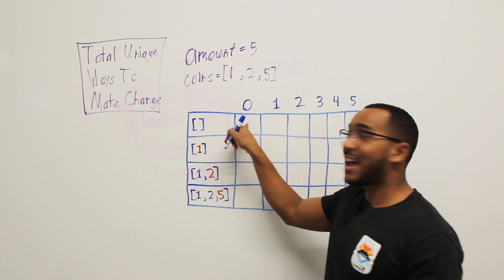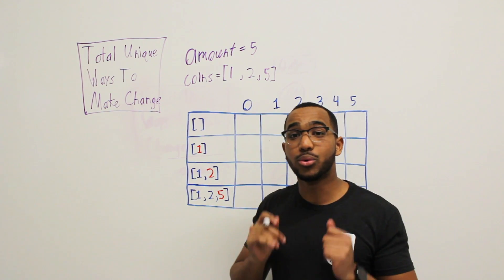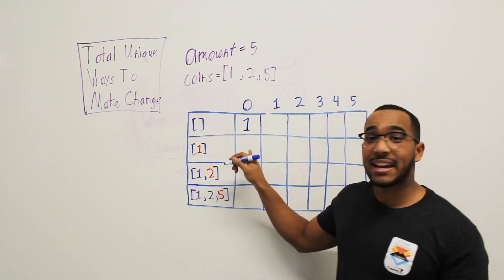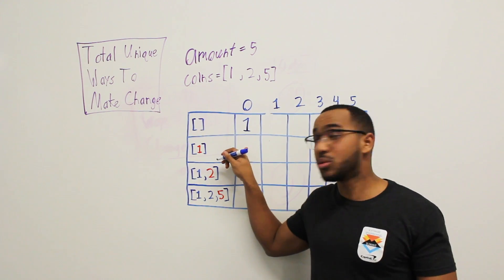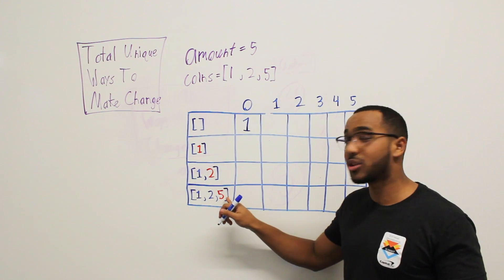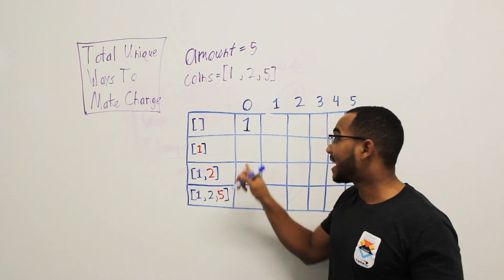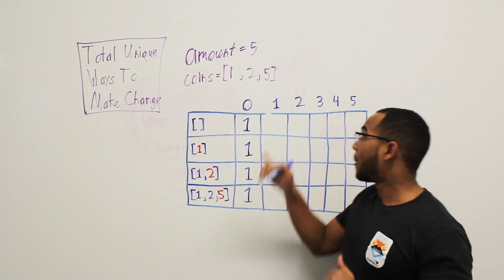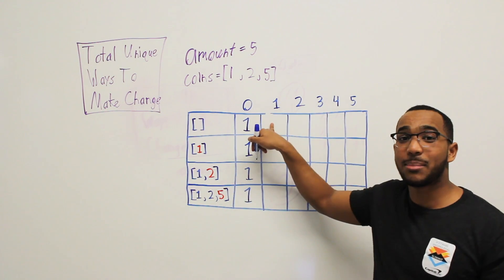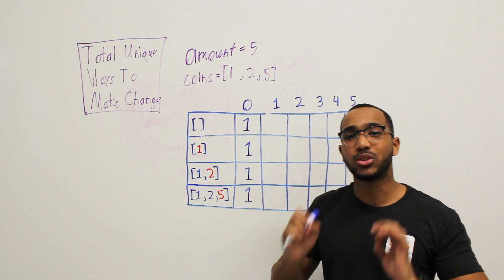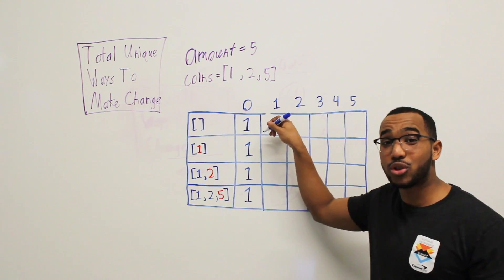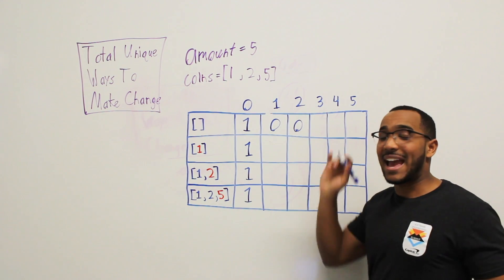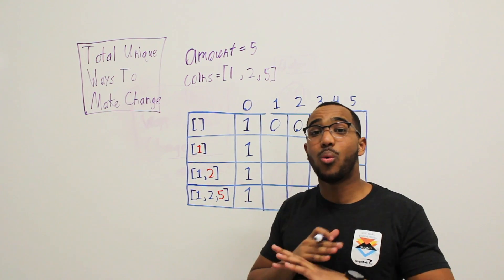Here is how we start our table. If I have a zero, no matter what coins you give me, I'm going to be able to make change one way, which is to do nothing. It does not matter what coins you give me — you could have the one, the one and two, or the one, two, and five — there will be one way to make change using no coins. If I have no coins at all and I need to make change for any amount, there will be zero ways to make change.